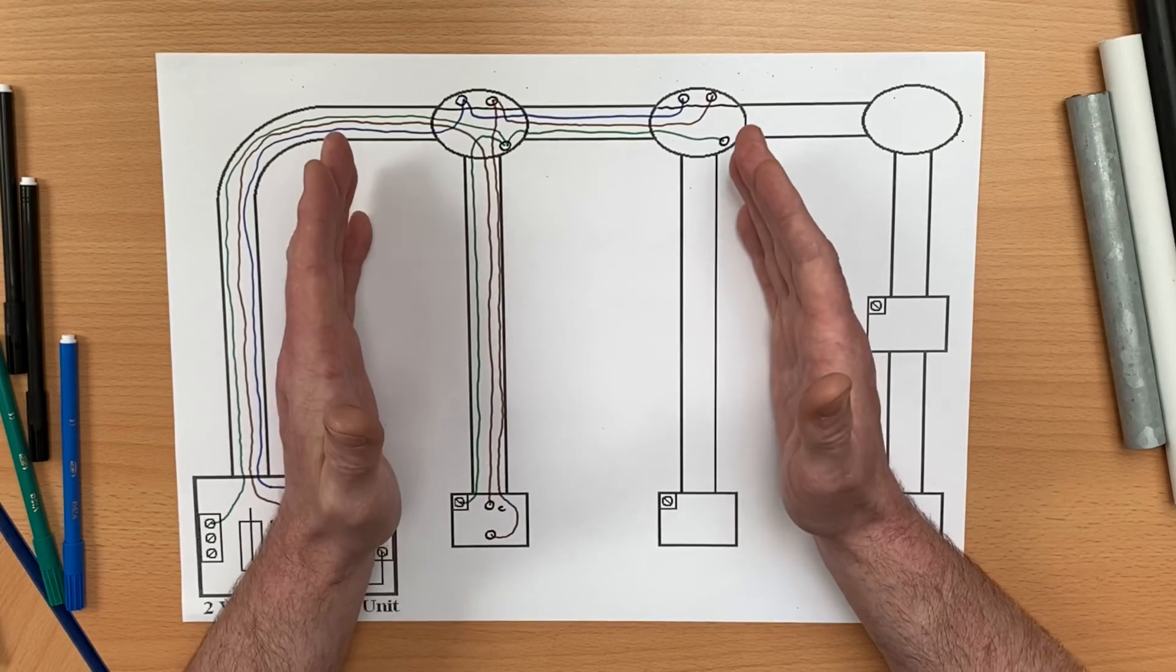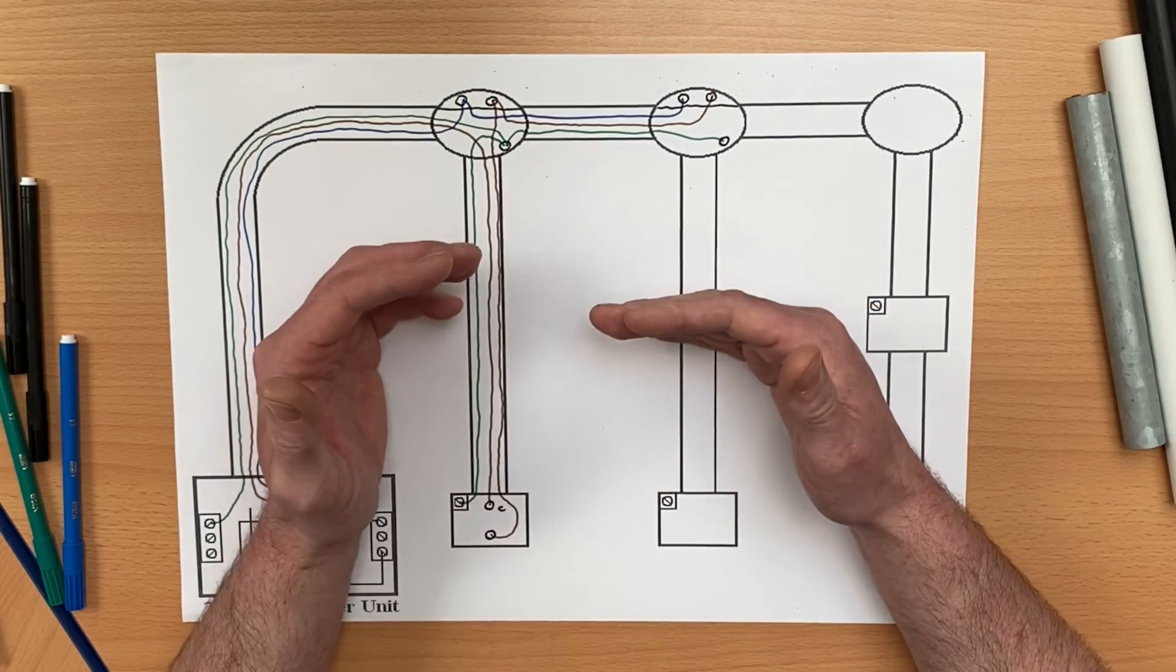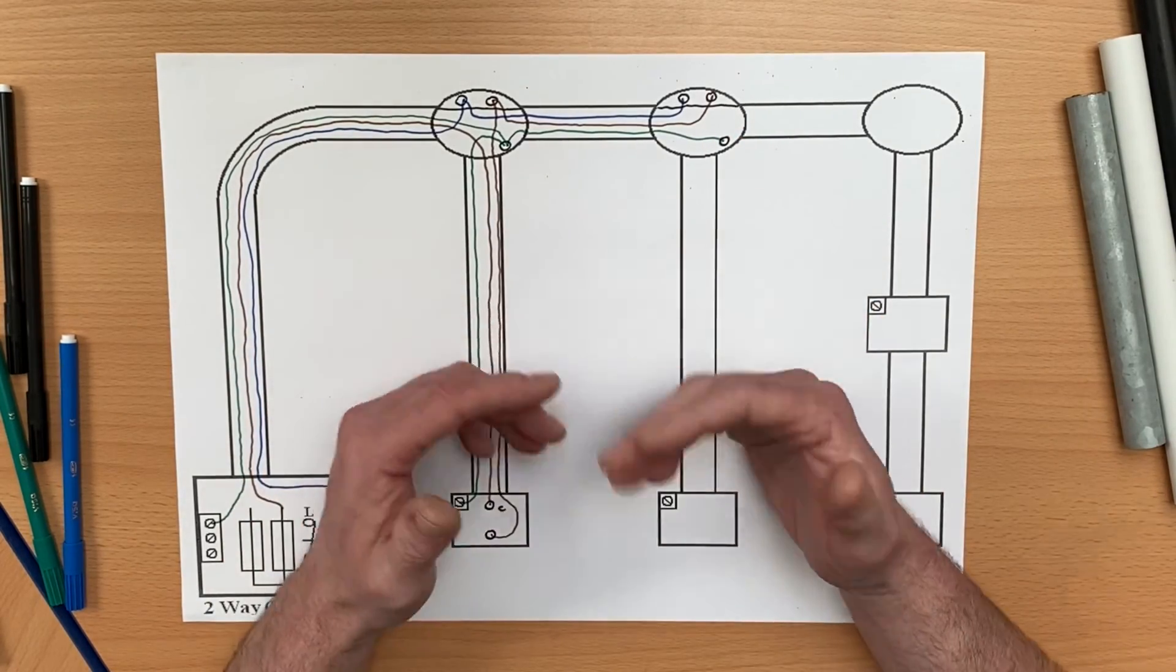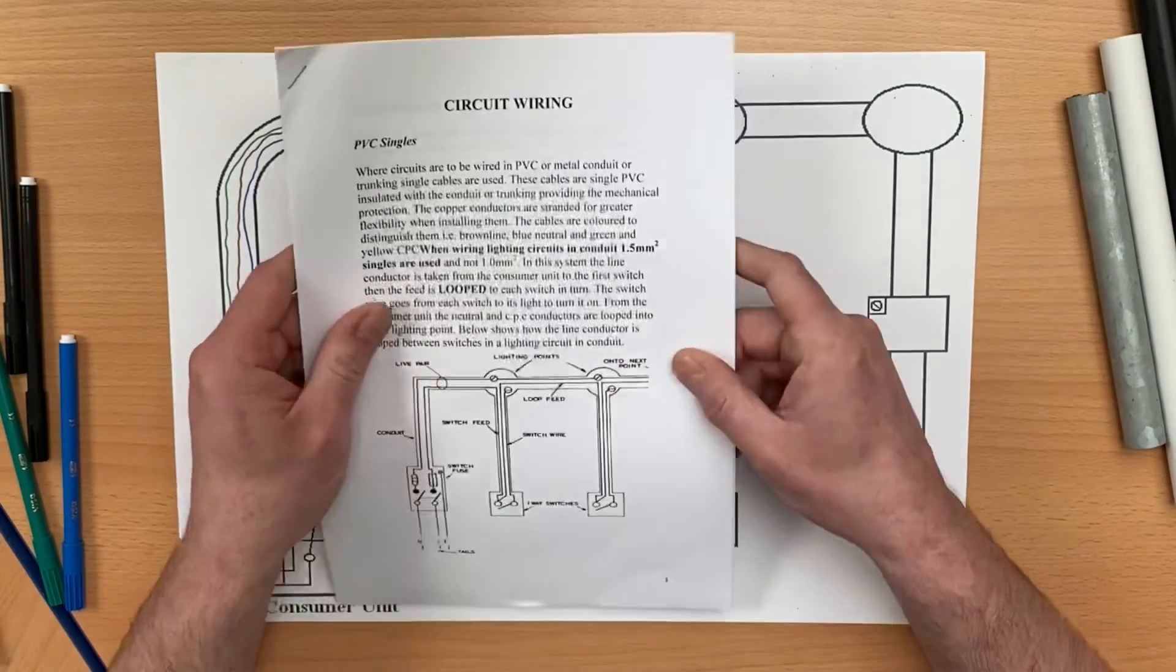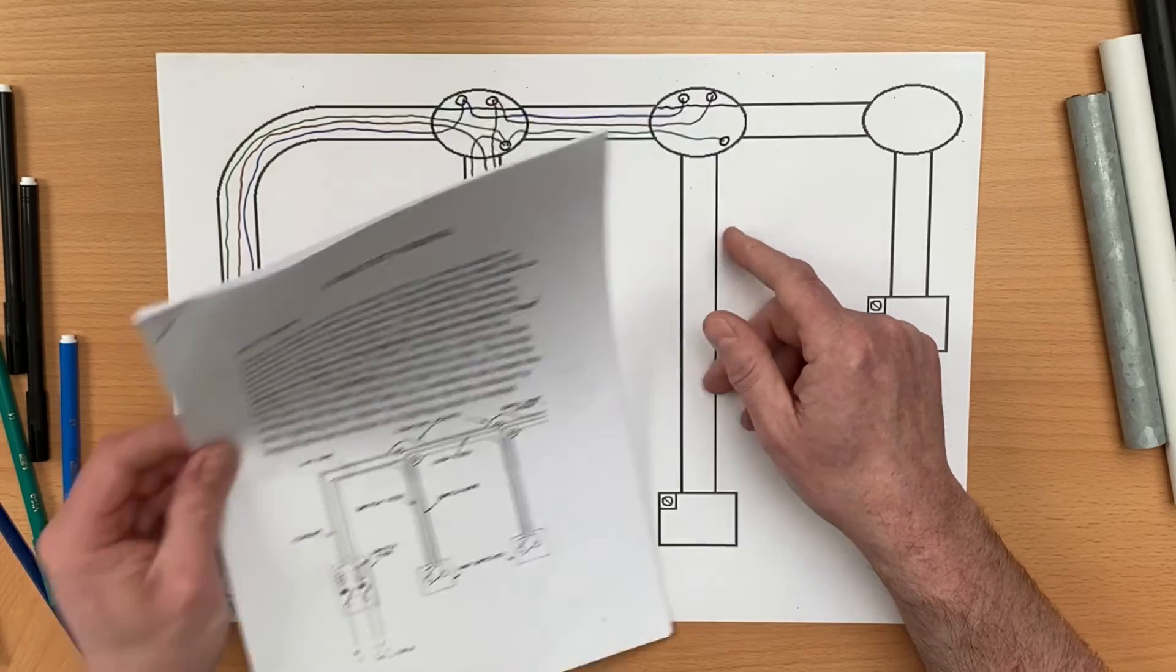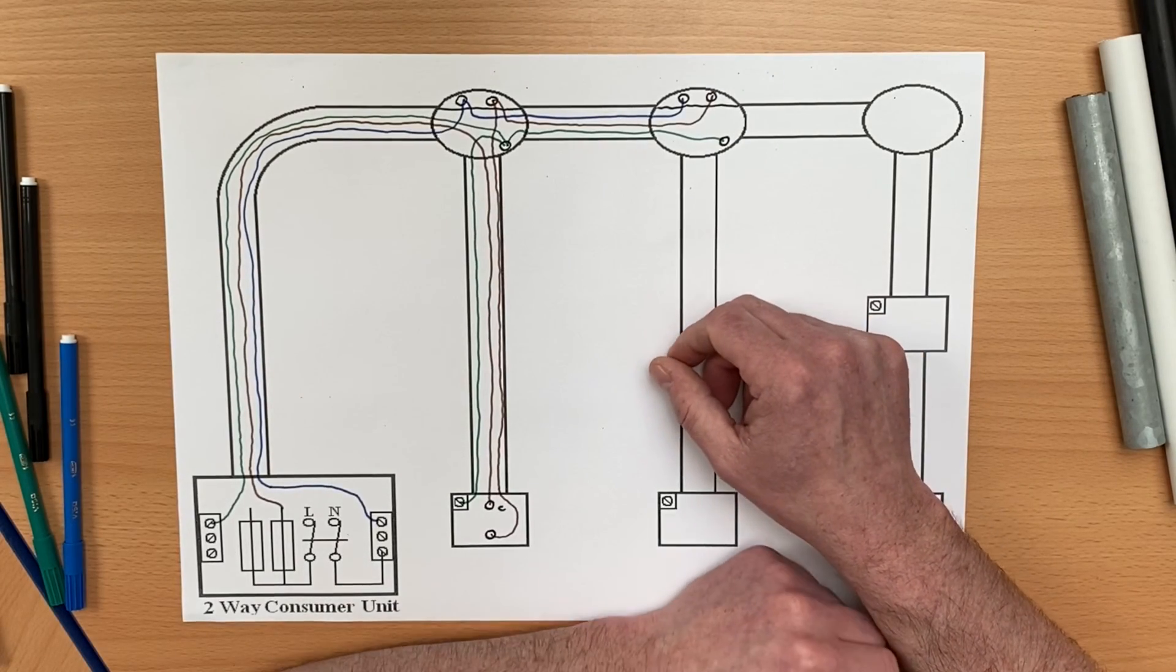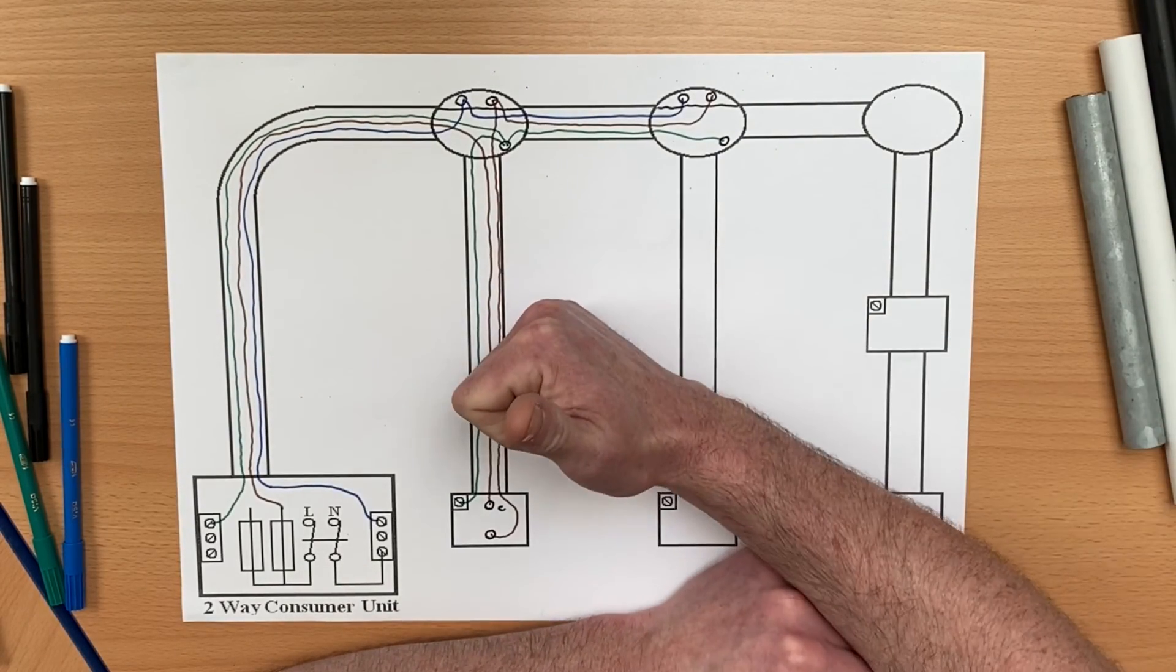In this drawing here we've picked up the most logical switching line conductor, neutral, and CPC in order to have another lighting point come on using this conduit looping system. We're going to take it on in further videos—we're going to start looking at two-way, two-way and intermediate as well as we work through the booklet, which is obviously downloadable in the link in the description. But as always, I hope this video has been some help.